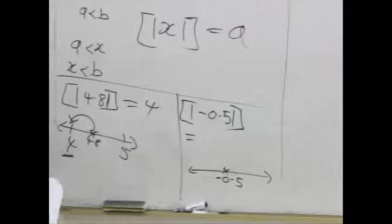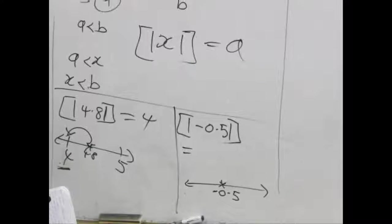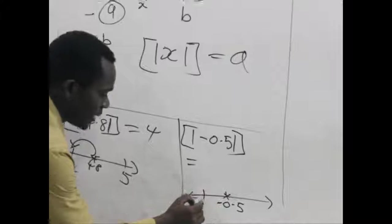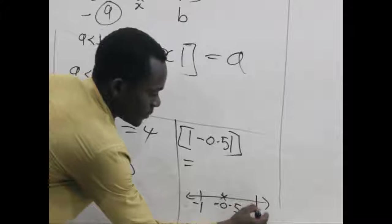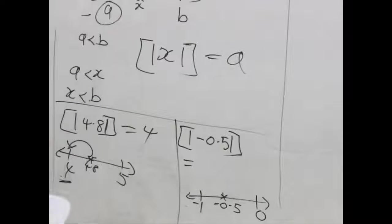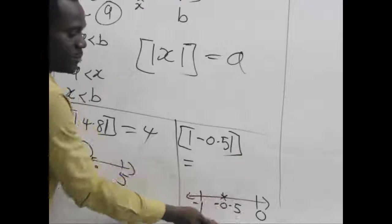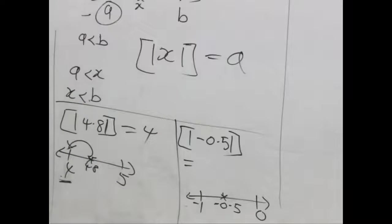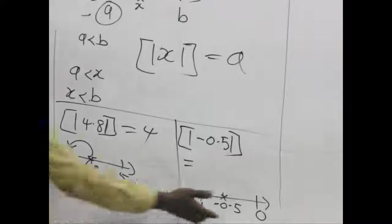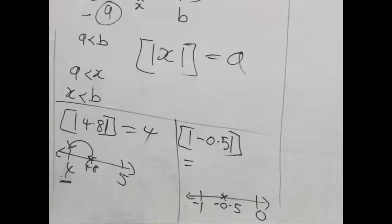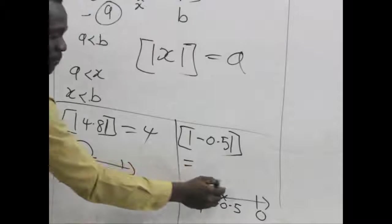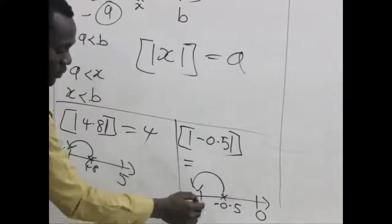We draw a short number line. Let's place our value negative 0.5 here. Negative 0.5 is actually in between negative 1 and 0. Negative half is in between 0 and negative 1. And for our greatest integer function, we got the greatest less than or equal to negative 0.5.